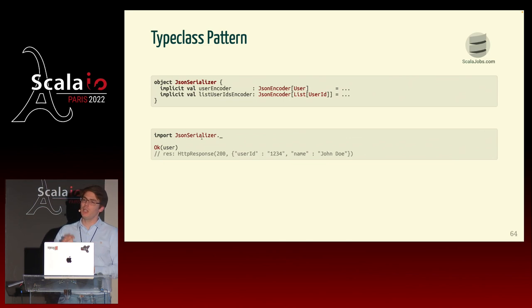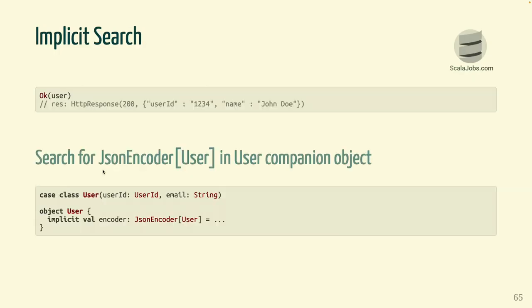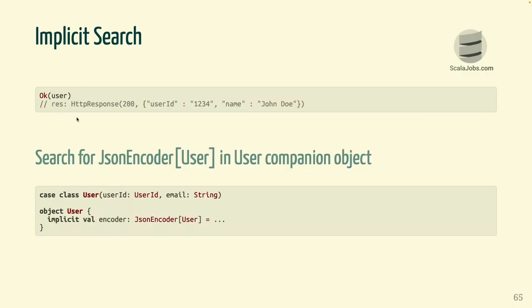There is a special rule in the compiler for this pattern. The implicit search first looks at the current scope. If it can't find the implicit there, it looks in the companion object of the target type. So if you have a JSONEncoder of User, it looks in the companion object of User. If we define our JSONEncoder of User in the User companion object, it becomes effectively globally available — every time the compiler looks for a JSONEncoder of User, it knows to look there. This means our code works without any custom imports.